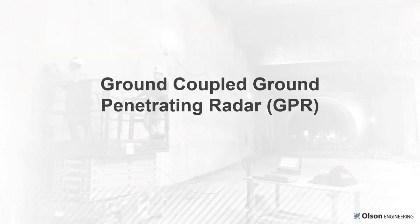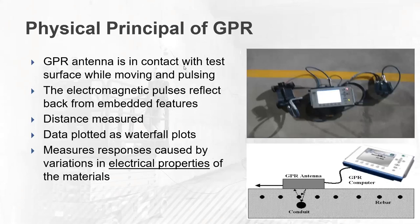Let's jump into ground-coupled ground penetrating radar. Air-coupled GPR is also available and has been done in tunnels, but it tends to have much less penetration depth. We've primarily concentrated on ground-coupled GPR for assessment of tunnel liners and pipes. The antenna is in contact with the surface as you're pulsing and moving, measuring echoes from different features such as rebar, conduits, or voids behind the tunnel liner. You plot the data as waterfall plots with depth versus distance, measuring response due to electrical properties. GPR is not very effective at finding thin cracks, but is useful for voids and very useful for rebar mapping.